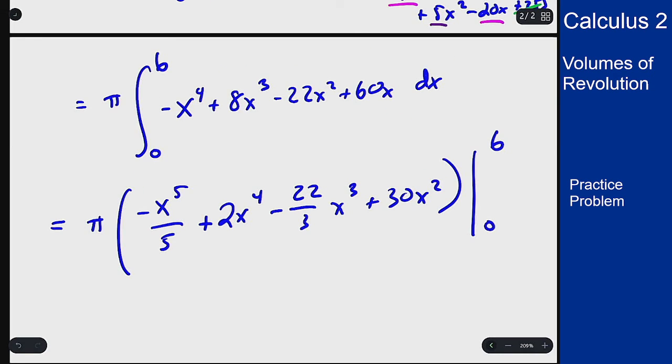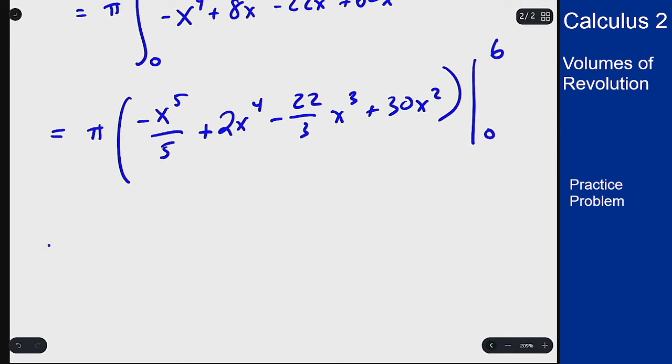We can then integrate. Plug in 0 we just get 0, so we plug in 6 to get our answer here, which will be pi times 30 times 6 squared plus 2 times 6 to the fourth, and then minus 22 over 3 times 6 cubed, and minus 6 to the fifth over 5.